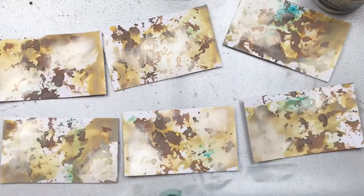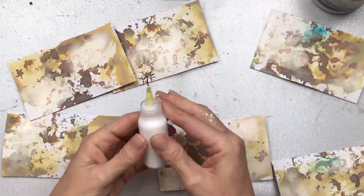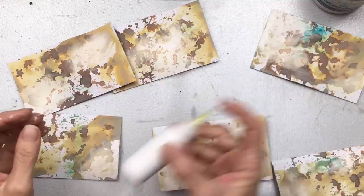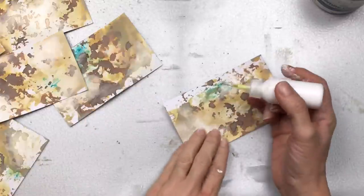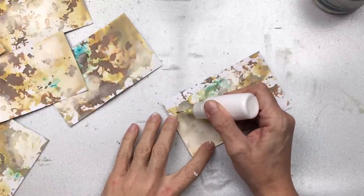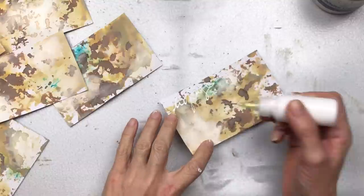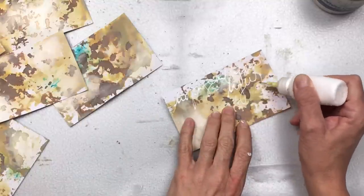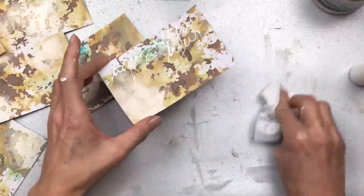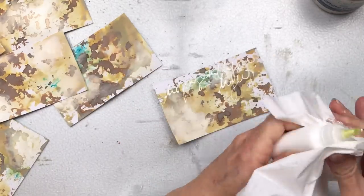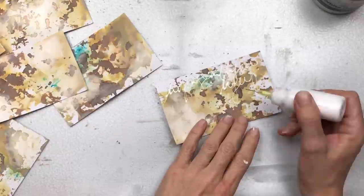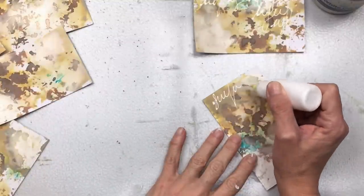Then again, dry your gesso really well before we go on to the next step. Here I have a fine line applicator bottle—I just bought this online. I've added some white acrylic paint and some water, and I'm just mixing it and shaking it. I'm going to squeeze and scribble as I go. I'm not writing anything that's legible—I'm just making little squiggles that look like writing, but it's just designs.